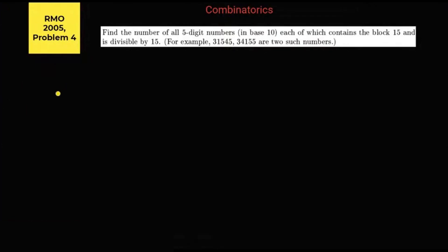Hello, today I'm going to discuss a question from RMO 2005, problem number four. This is a question from combinatorics. The question is to find the number of all five-digit numbers in base 10, each of which contains the block '15' and is divisible by 15. For example, this number contains the block '15' — you can see here — and another number also contains the block '15'. These are two possible cases, and these numbers are divisible by 15.